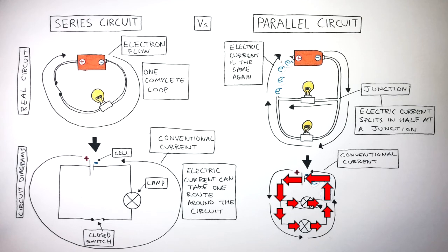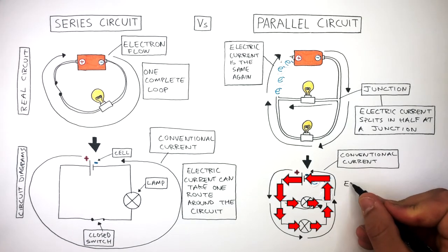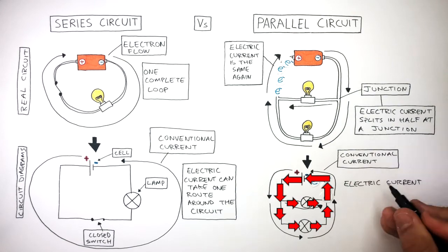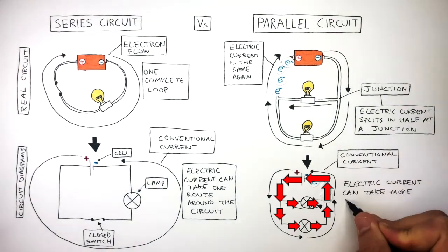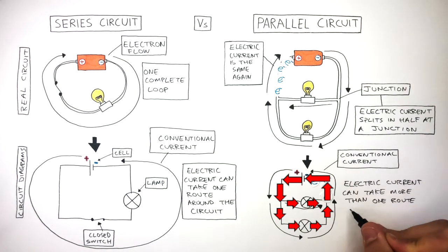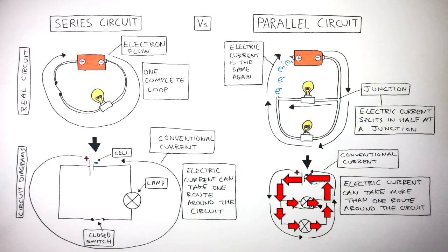So we can see in a parallel circuit, the electric current can take more than one route around the circuit, due to the different loops and junctions.